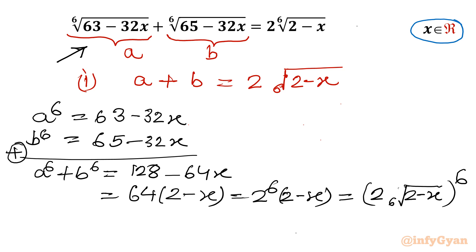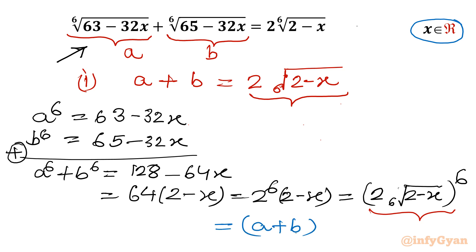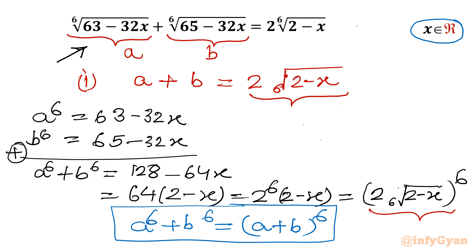I am writing this because of equation number 1's right-hand side. So I can write a⁶ plus b⁶ equal to (a plus b)⁶. This is our final conclusion.